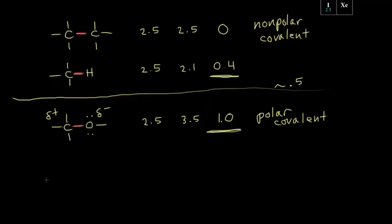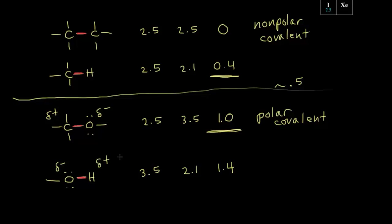Let's do another example — let's compare oxygen to hydrogen. We've already seen the electronegativity values for both atoms: oxygen had a value of 3.5 and hydrogen had a value of 2.1, so that's an electronegativity difference of 1.4. This is a polar covalent bond. Since oxygen is more electronegative than hydrogen, the electrons in red are going to move closer to the oxygen, so the oxygen gets a partial negative charge and the hydrogen gets a partial positive charge.